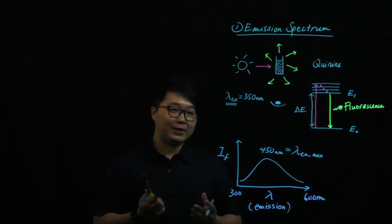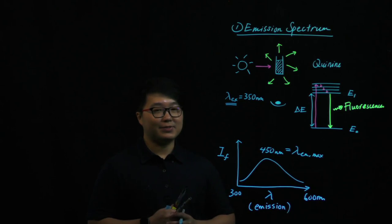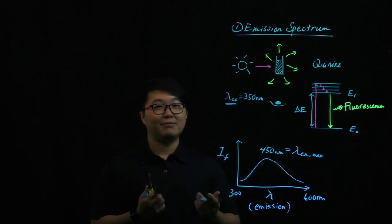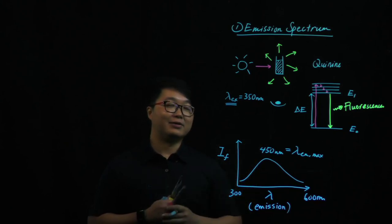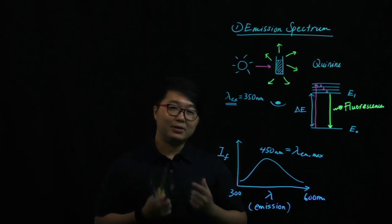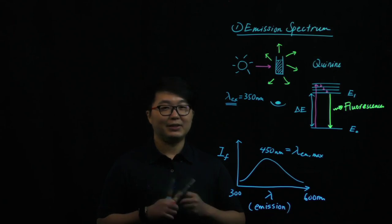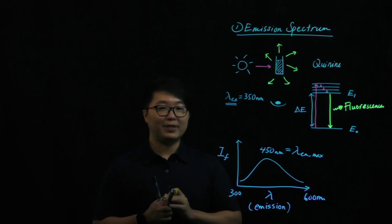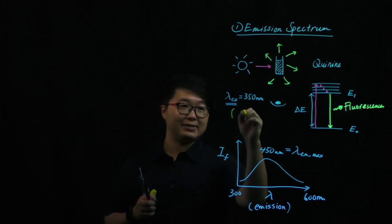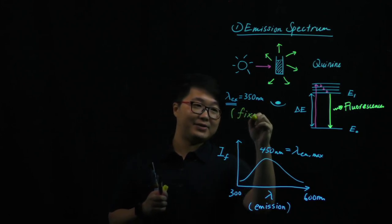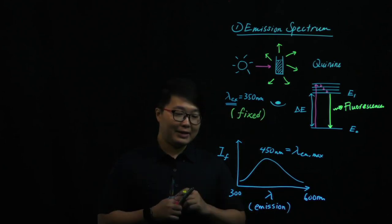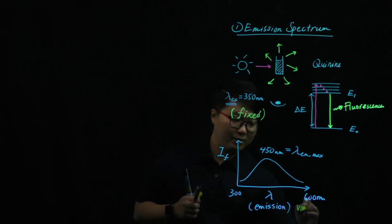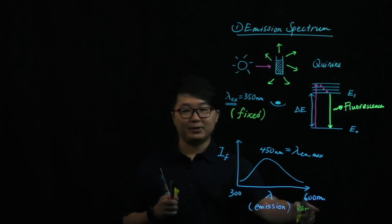So in summary, the purpose of running an emission spectrum is to find the emission peak for the fluorescence compound by setting an arbitrary excitation wavelength to excite the sample. In terms of experimental design, when measuring the emission spectrum of crinine, the excitation wavelength is fixed — we set this arbitrary value. The emission wavelength is the variable, because we scan from 300 nm to 600 nm.